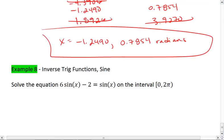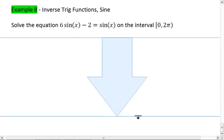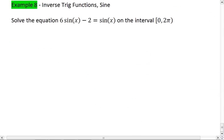For the last example, we're going to look at another example with inverse trig functions, using inverse sine. And again, we're going to be on a restricted interval. We're on 0 to 2 pi, or 0 to approximately 6.28.